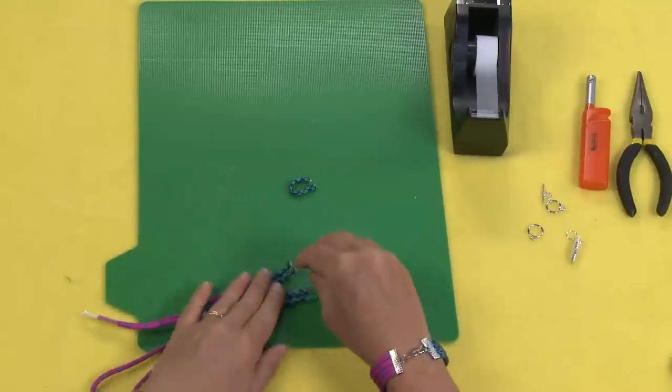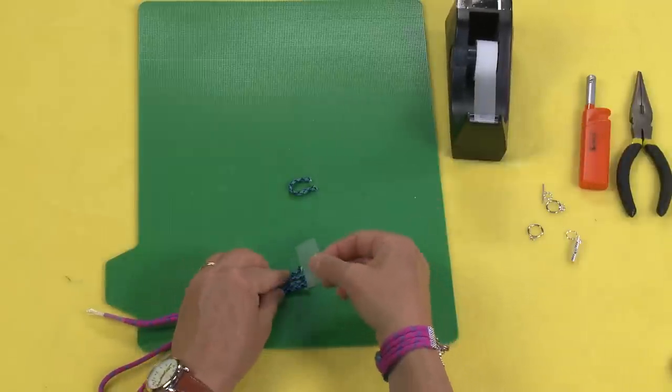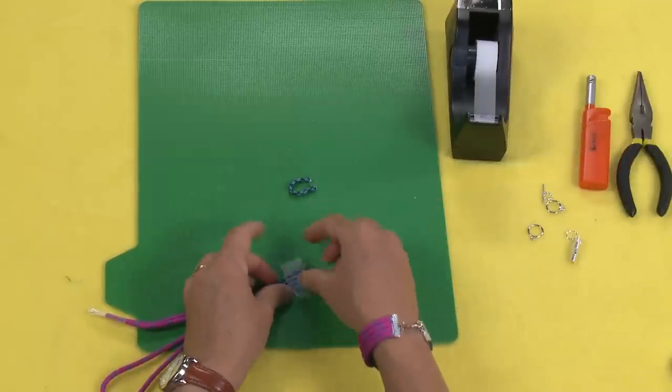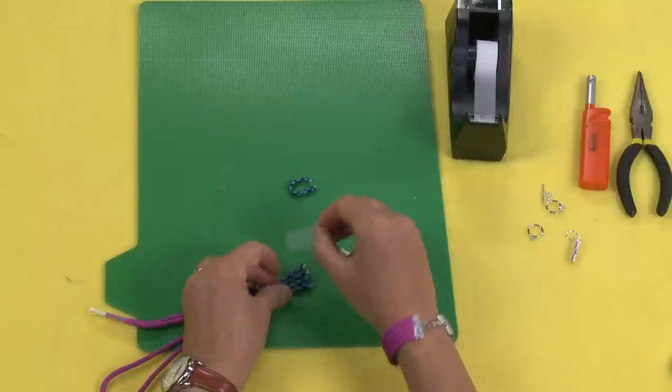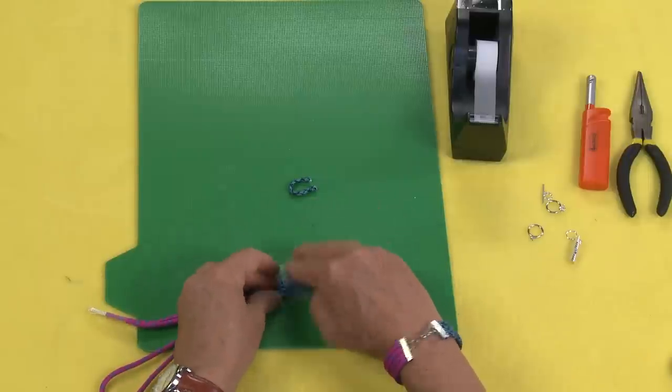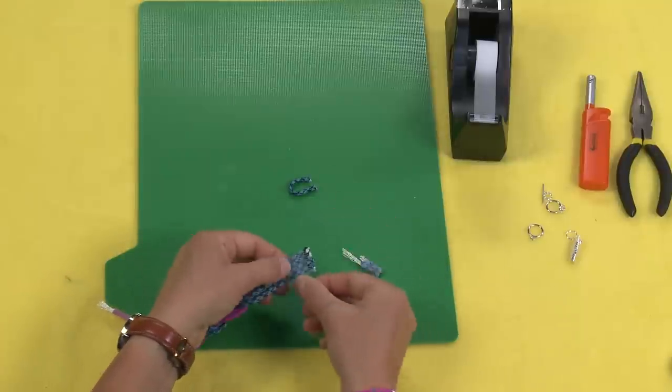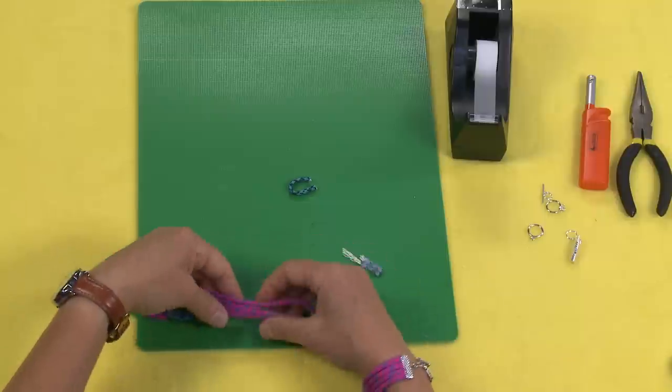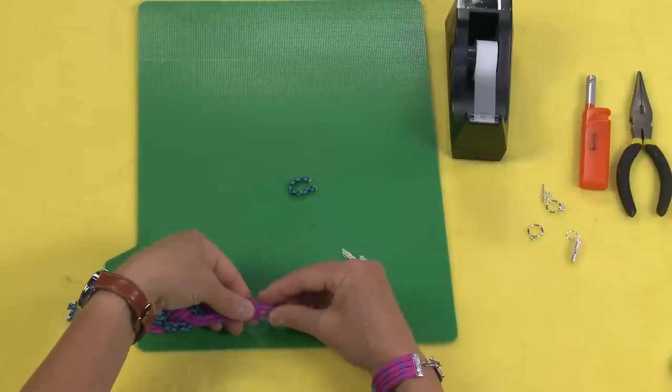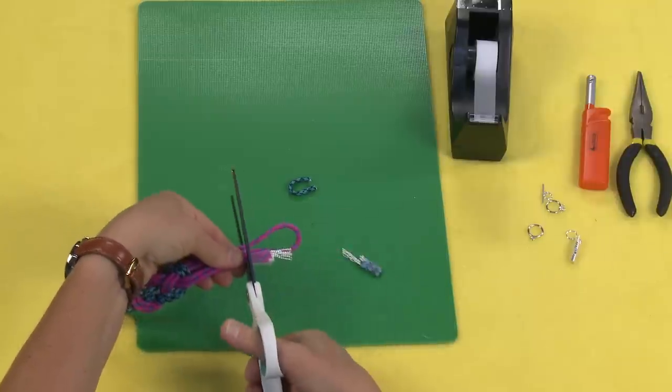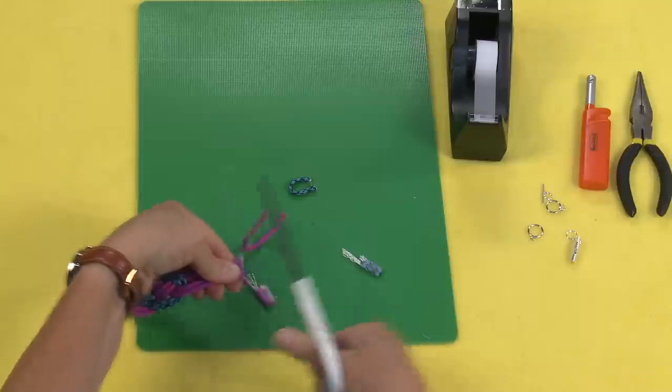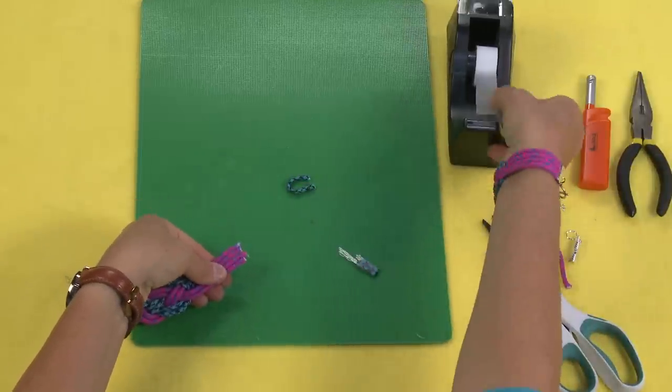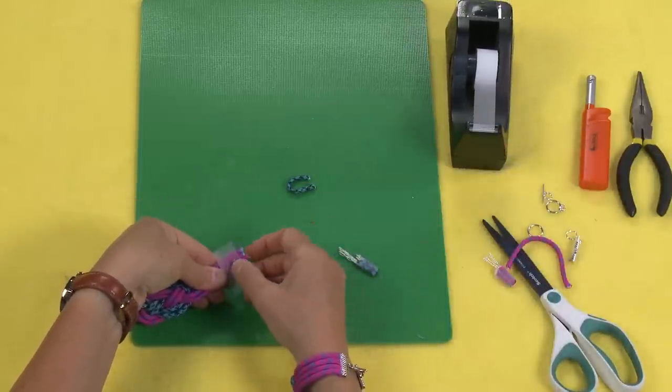And then take a piece of tape and once again we're just going to tape these so that these edges stay together. Now don't tape them quite all the way at the end and you'll see why in just a second. But you want to tape these ends together, leaving a little bit sticking out. And then we're going to repeat this on the other side here, taping right underneath.